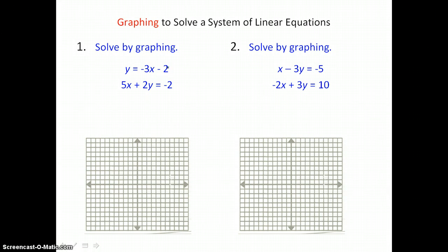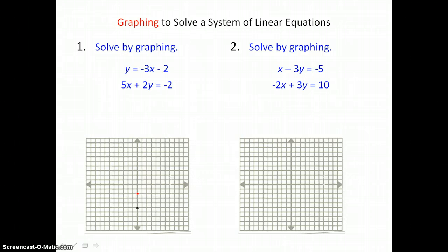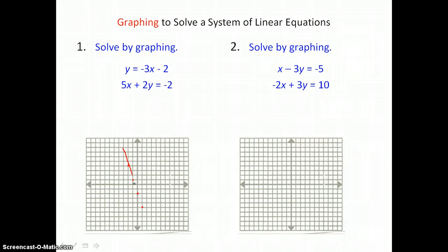The first equation is already in that form, so we can go ahead and start by graphing our y-intercept of negative 2, and then using the slope of negative 3, or negative 3 over 1, to find more points. I could go down 3 units and right 1 unit, or up 3 units and to the left 1 unit, and keep doing that to draw my line on the coordinate plane slanting downward from left to right.